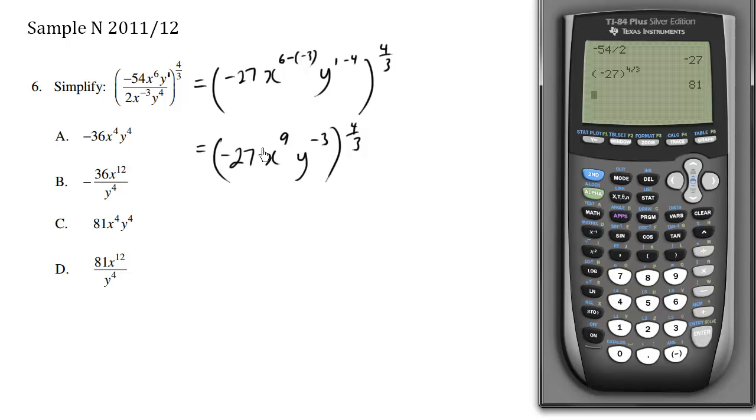So we know that the negative 27, the number part to the exponent 4 thirds is 81. That's this number part. Alternatively, we could have rewritten this as negative 3 to the exponent 3. Since negative 3 times negative 3 times negative 3 becomes negative 27. That's the same as this part here. And then this here, all to the exponent 4 thirds.